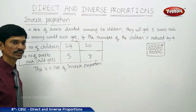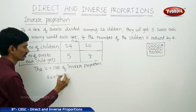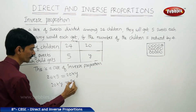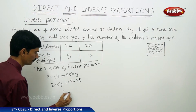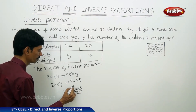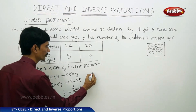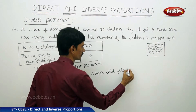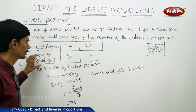In inverse proportion, the product of two quantities remains constant. So 24 into 5 equals 20 into y, meaning 20 into y equals 24 into 5. Transposing, y equals 24 into 5 divided by 20. Cancelling: 4 sixes are 24, 4 fives are 20, and 5 ones are 5, giving y equals 6. Therefore, each child gets 6 sweets when the number of children is 20.